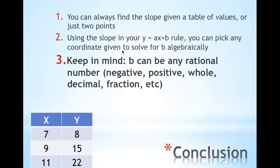I also want you to keep in mind that B can be any rational number. So B can be negative, positive, a whole number, a decimal, a fraction, and so on. B can be any rational number.